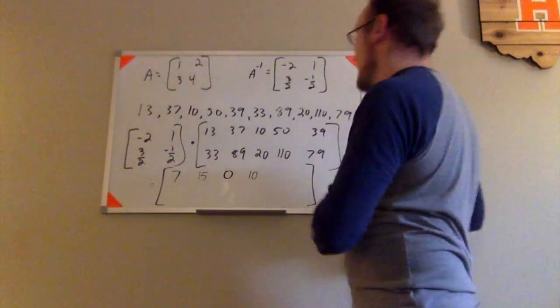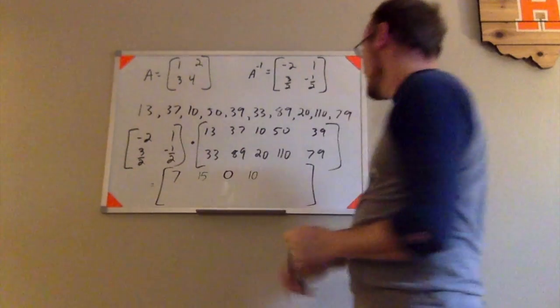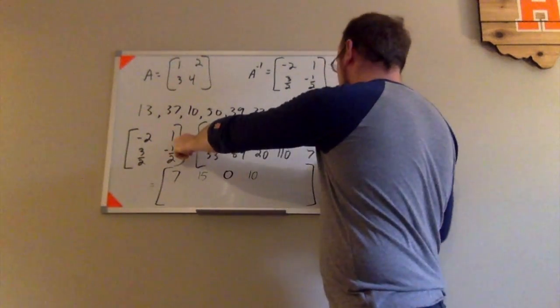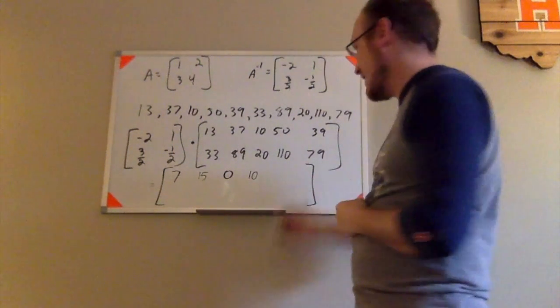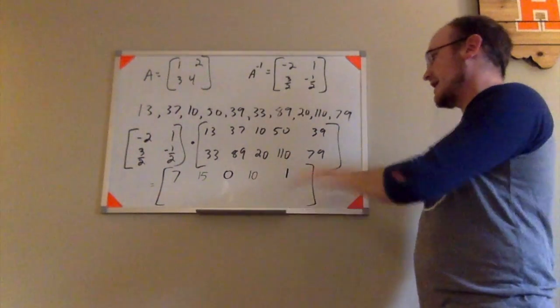Finally, first row, last column. I have negative 2 times 39, which is negative 78. I have 1 times 79, which is 79. Negative 78 and 79 makes 1. So I've completed my first row of that.